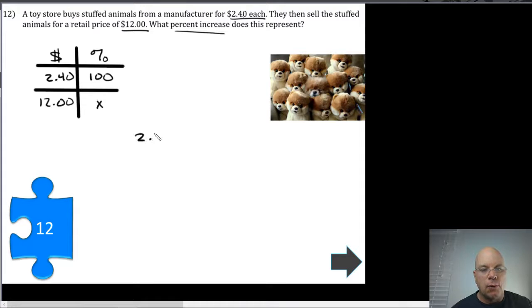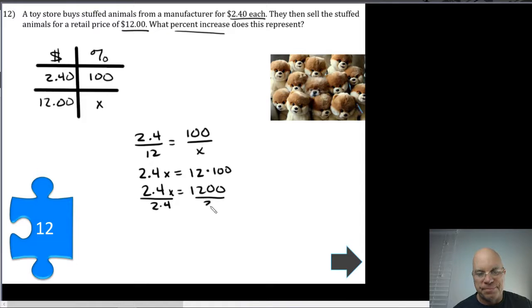2.4 over 12 is equal to 100 over x. Cross products would be 2.4 multiplied by x, so 2.4x is equal to 12 multiplied by 100. 2.4 multiplied by x is equal to 1200. And then we would divide both sides by 2.4 to find 1x, which is x. That's why we did it.